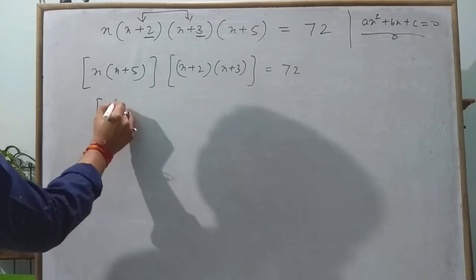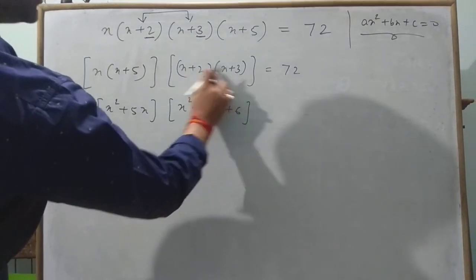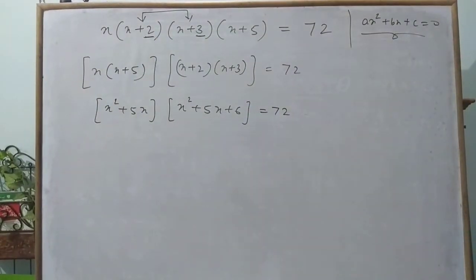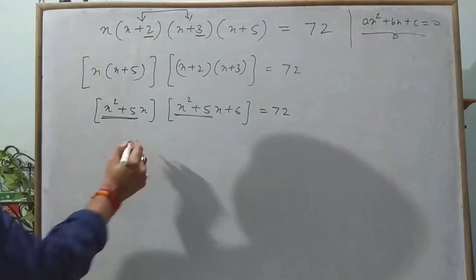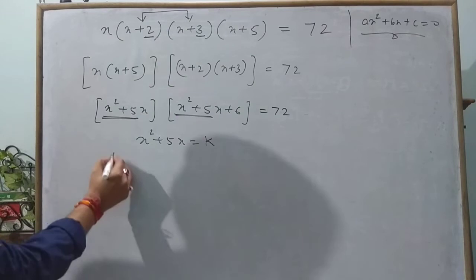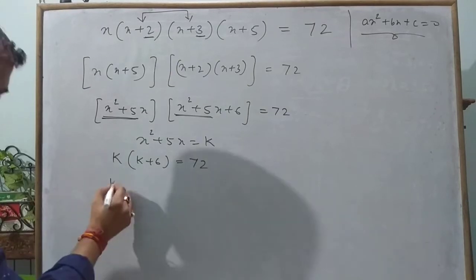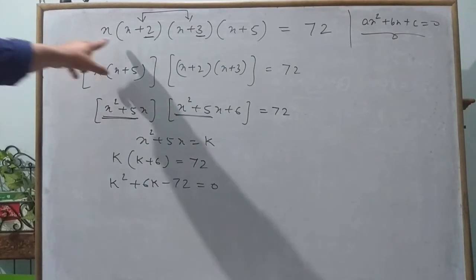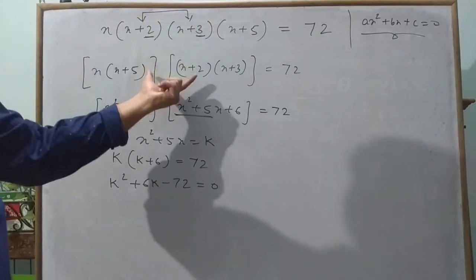Multiplying the pairs: x(x+5) = x² + 5x, and (x+2)(x+3) = x² + 5x + 6. So the equation becomes (x² + 5x)(x² + 5x + 6) = 72. Notice x² + 5x appears in both. We give x² + 5x a new name k, so it becomes k(k + 6) = 72, which gives k² + 6k − 72 = 0.